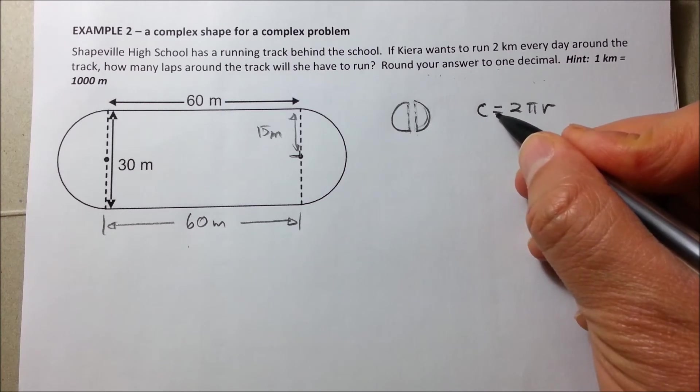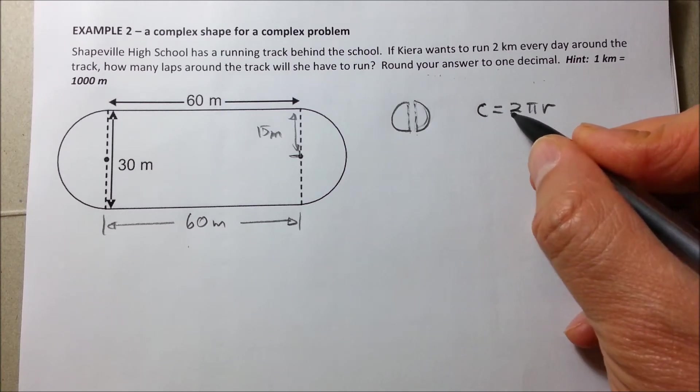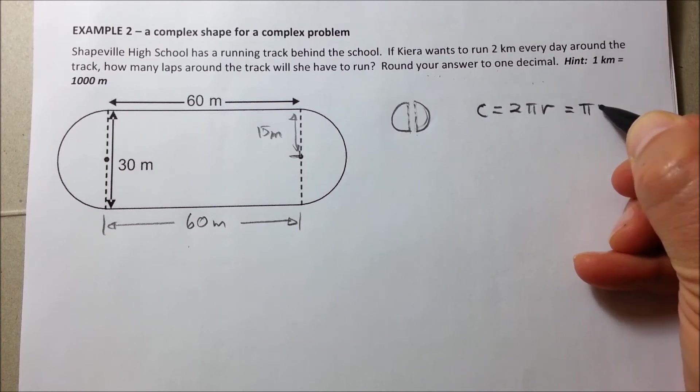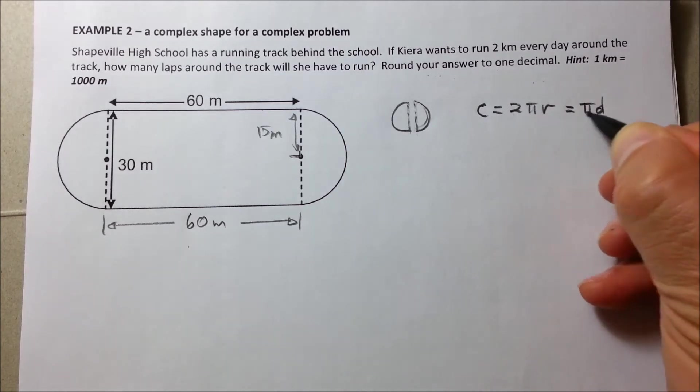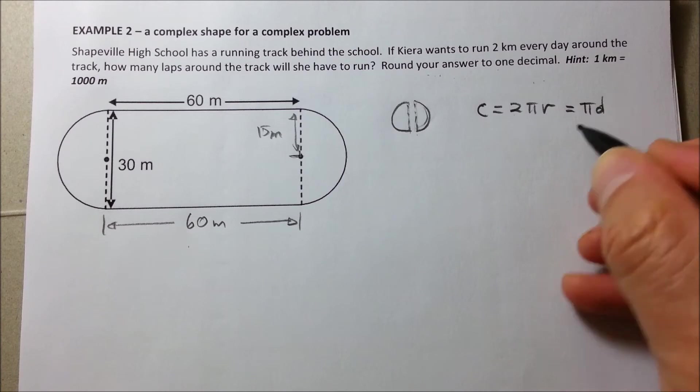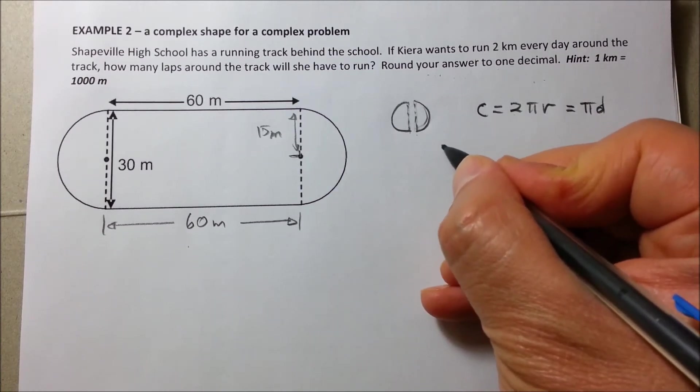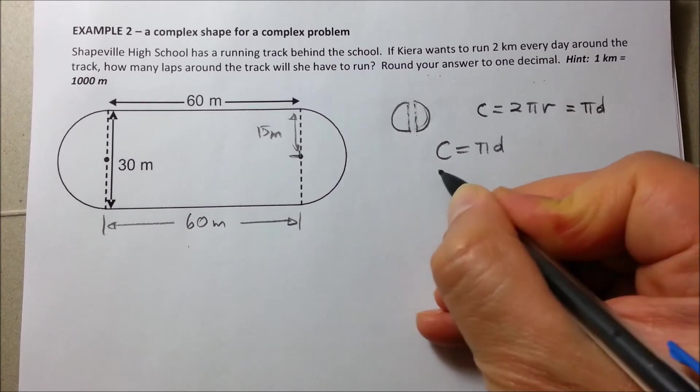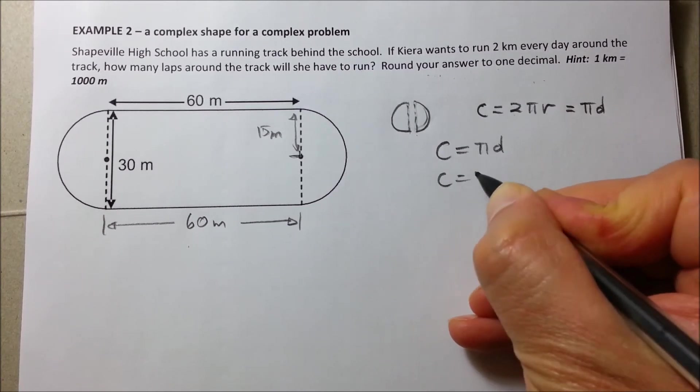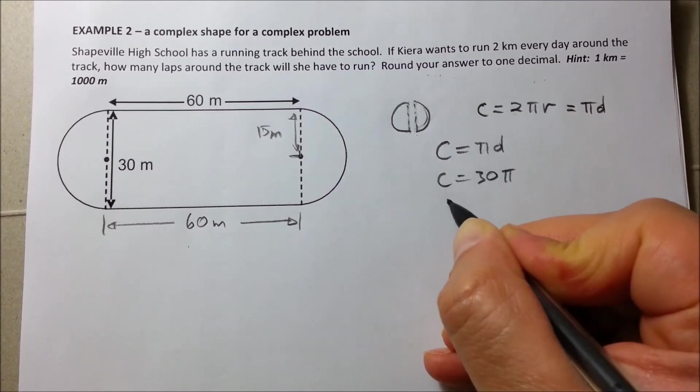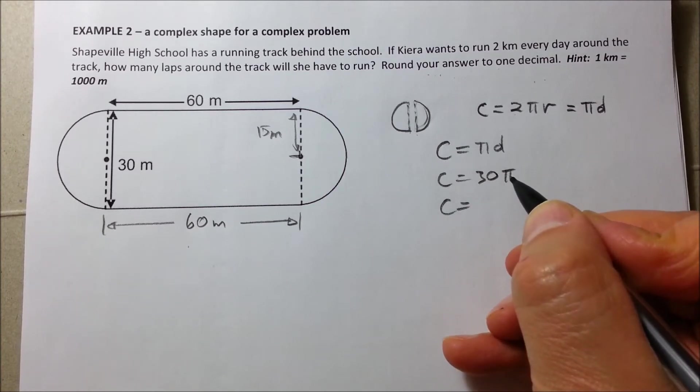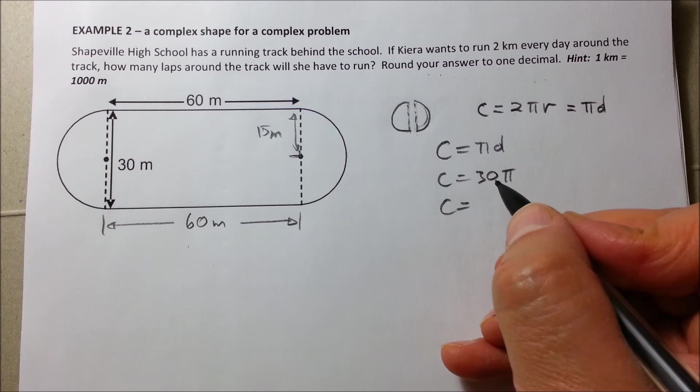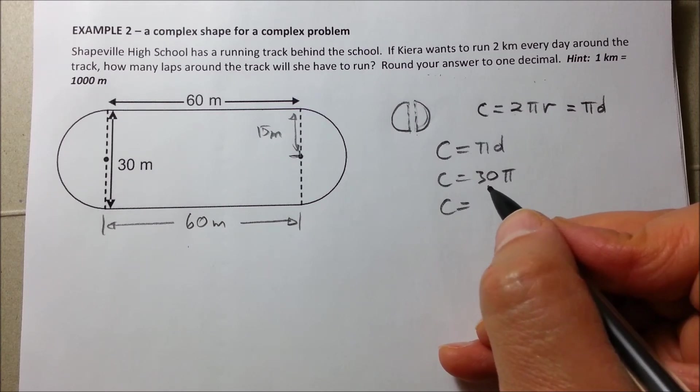So, that means that the formula for the circumference would be 2πr or also which is the same as saying π times d because 2 times r gives you the diameter. Alright. So, let's actually use the diameter this time. C equals π times d and we know that the diameter is equal to 30. And 30 times π gives us what?